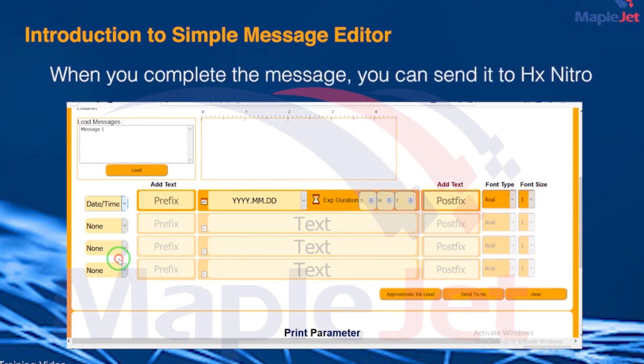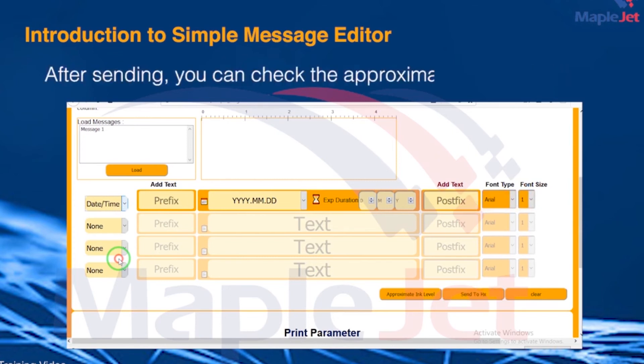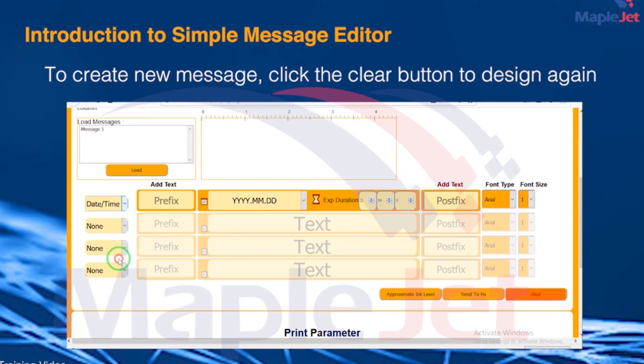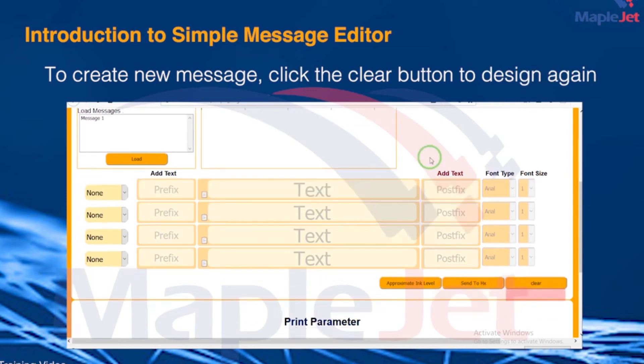When you complete the message, you can send it to HX Nitro. After sending, you can check the approximate ink consumption. To create a new message, click the Clear button to design again.